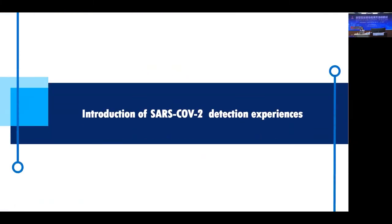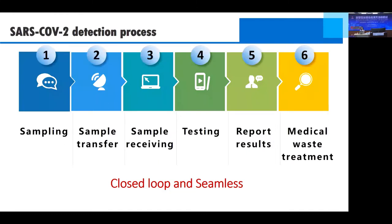Let's introduce the detection of SARS-CoV-2 experiences. As we all know, by the end of 2019, variations of various SARS viruses spread all over the world, and the epidemic situation is still serious. The process of SARS-CoV-2 detection has six steps: sampling, sample transfer, receiving samples, testing, reporting results, and medical waste treatment. It's a closed loop and seamless, and all steps are very important.